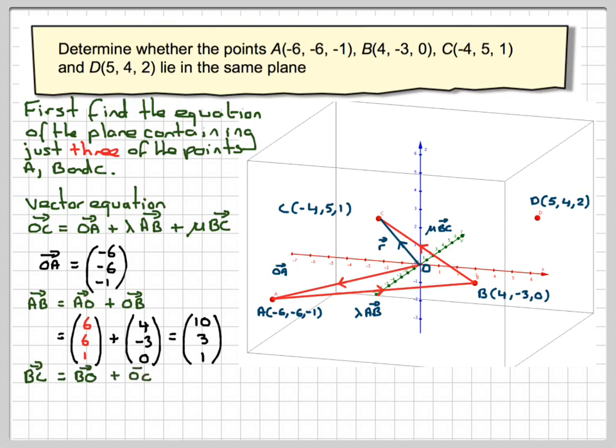The vector BC is the same as going BO plus OC. So it's going to be minus the coordinates of this one. So it's going to be (-4, +3, 0) plus the coordinates of C, which are (-4, 5, 1). So that's going to give me (-8, 8, 1). So I'm now in position to form my vector equation of the plane for A, B, and C.